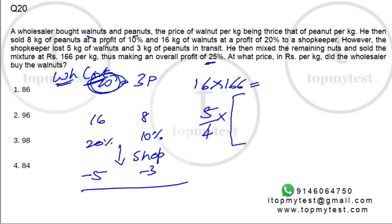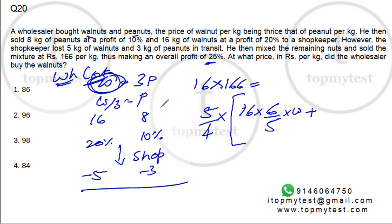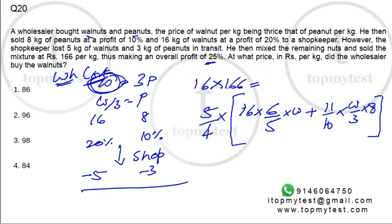Now let's look at the wholesaler. He sold 16 kilos of walnuts at a 20% profit. 20% is one-fifth, so the selling price is six-fifths of his cost price. Peanuts cost one-third of walnuts. On peanuts, a 10% profit means the selling price is 11/10 of cost, and cost per kilo of peanuts is walnut price divided by 3. He sold 8 kilos of peanuts. This gives the shopkeeper's total cost.